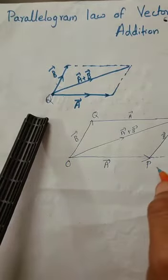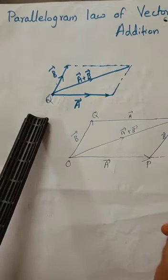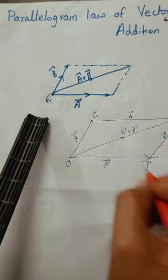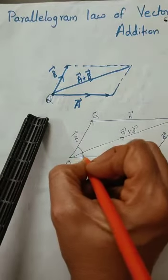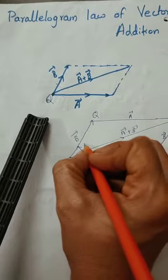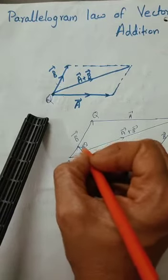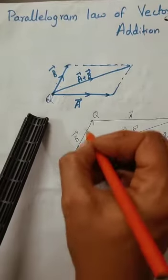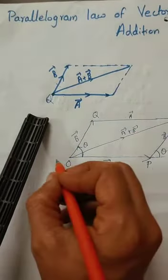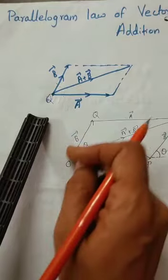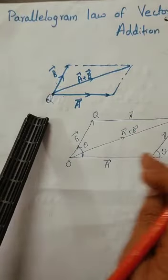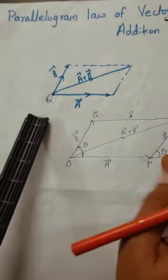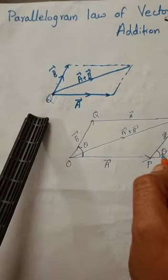Now consider one right angle triangle. Let theta be the angle between the two vectors A and B. This angle is theta. This angle is also equal to theta, because these are two parallel lines with a transversal, giving us corresponding angles. So this angle is also equal to theta.